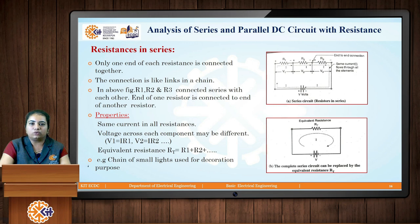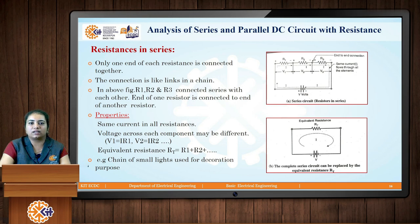We consider the voltage drop across R1 is V1, similarly voltage drop across R2 is V2 and voltage drop across R3 is V3. To analyze this circuit where voltage drop across each element is different but current is the same, according to KVL we write the equation: V equals V1 plus V2 plus V3, and so on if more resistances are connected in series.